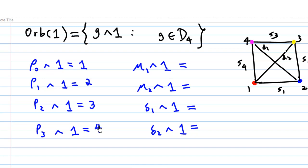For the reflections: mu1 is a vertical reflection, so 1 moves to 2. Mu2 is a horizontal reflection, so 1 moves to 4. Delta1 is a reflection along diagonal D1, so vertex 1 moves to 3. Delta2 is a reflection in the line along D2, so vertex 1 stays at 1. Collecting all the results, the orbit of 1 is {1, 2, 3, 4}.